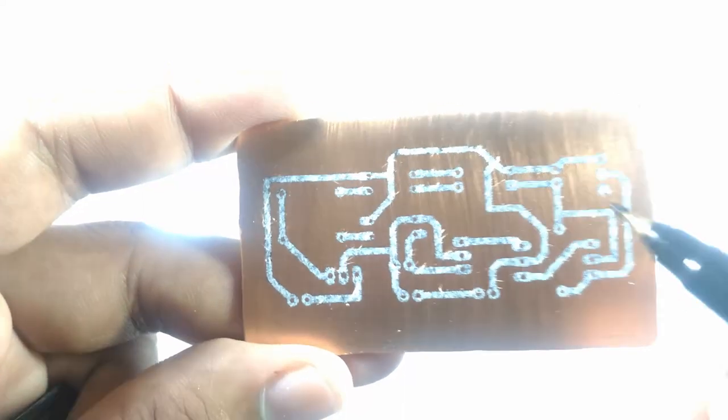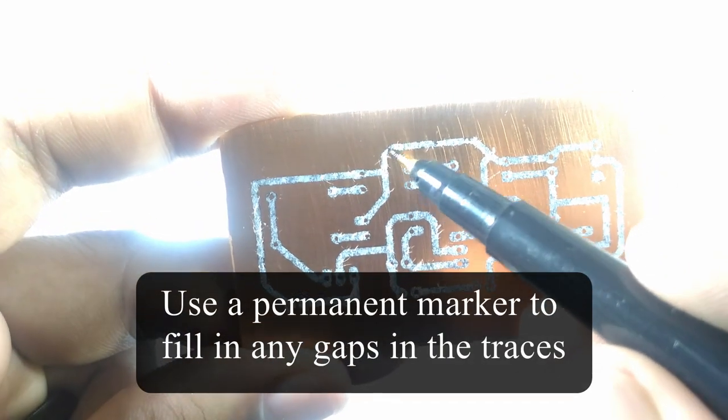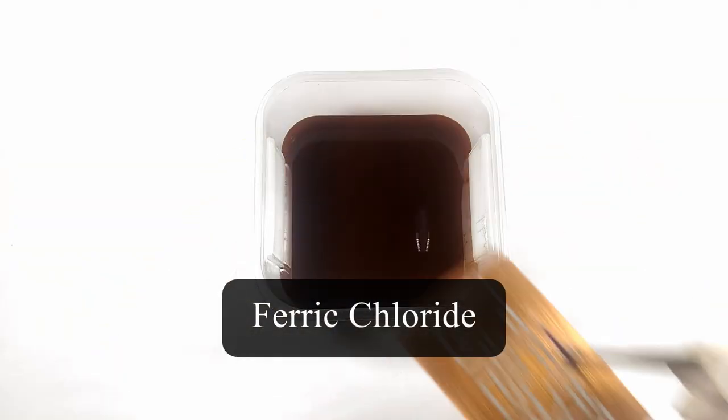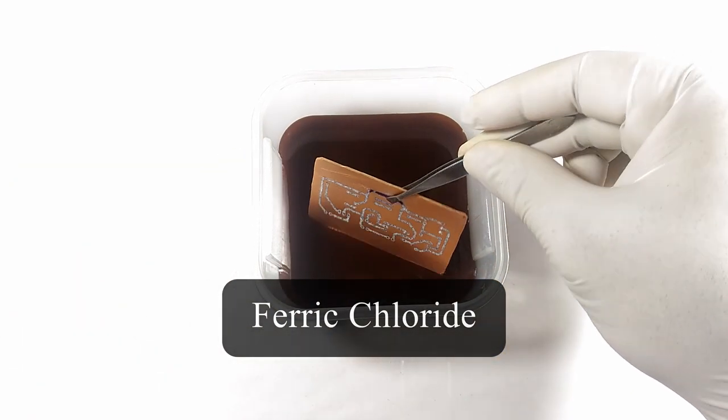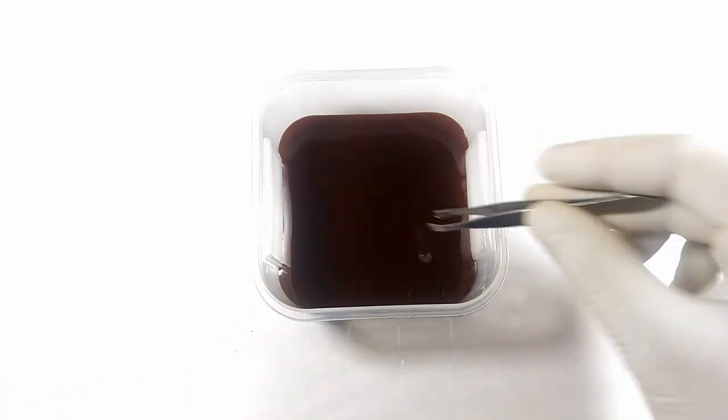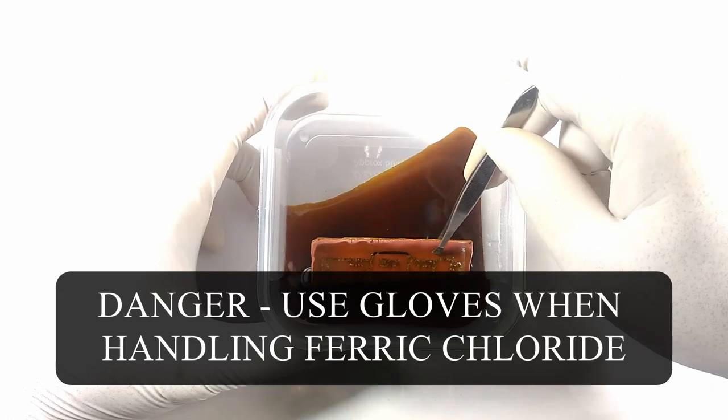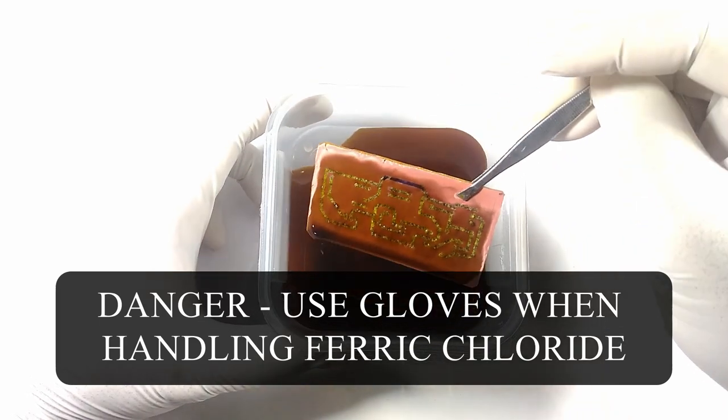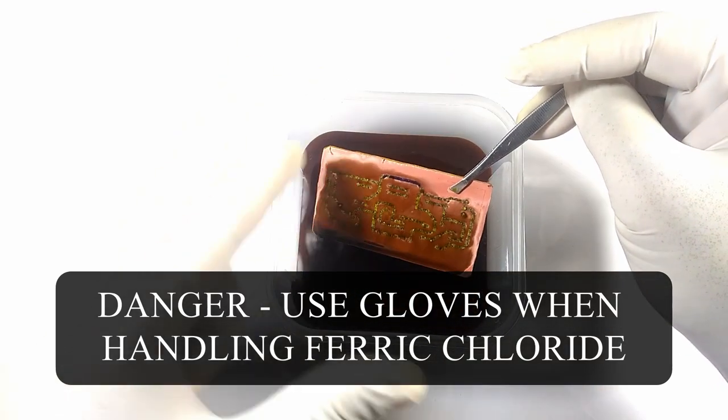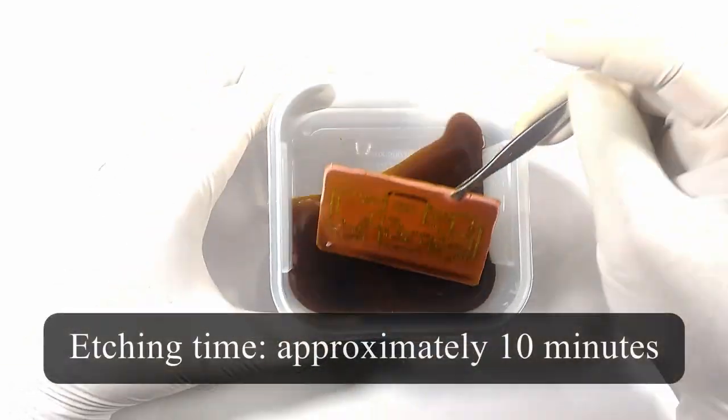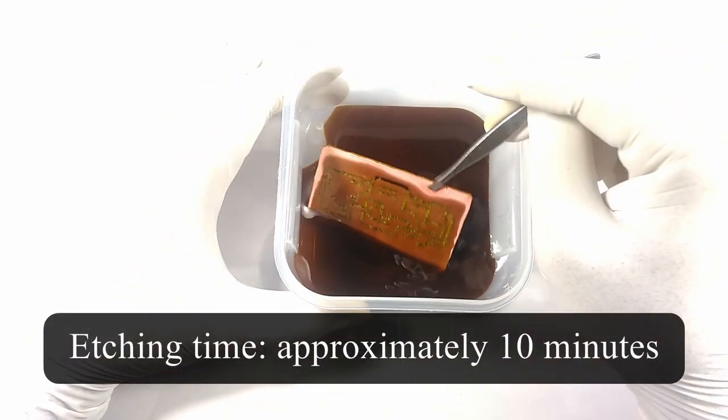After I wiped it dry, I used a permanent marker to fill any gaps in the traces that may have formed when peeling off the magazine paper. I used ferric chloride to etch the copper board. Please use caution when handling ferric chloride. The copper starts to dissolve off little by little. The etching process may take approximately 10 minutes.